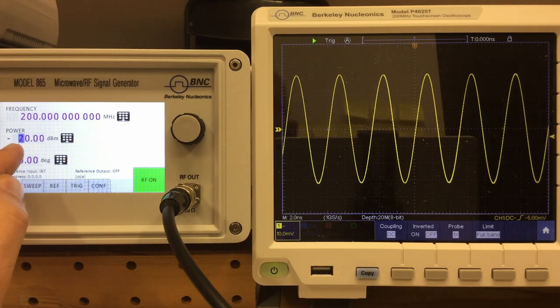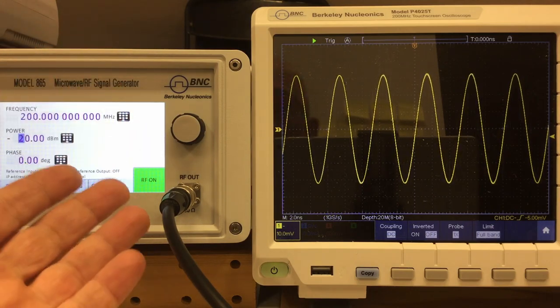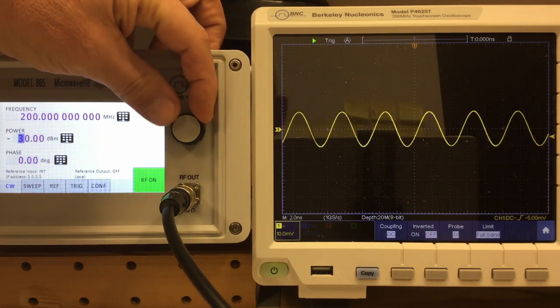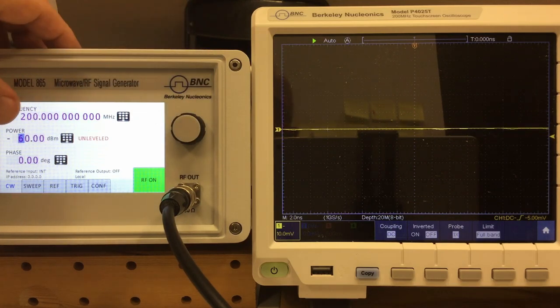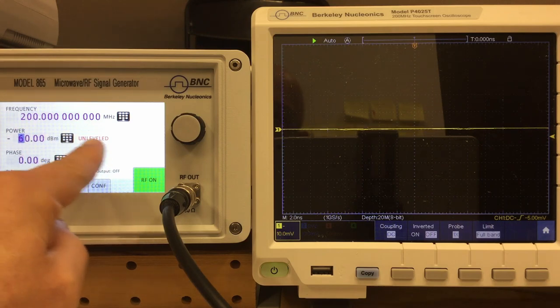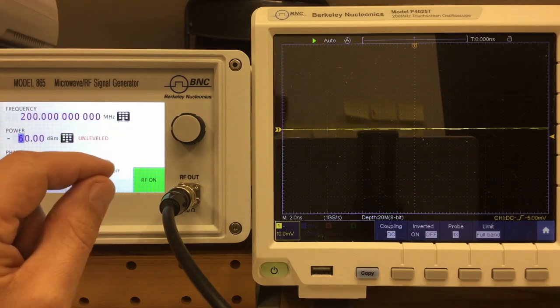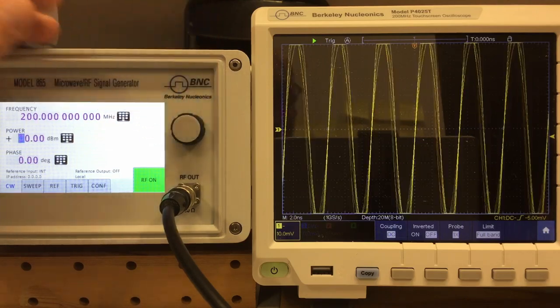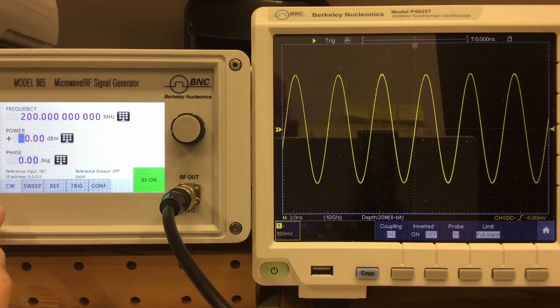Secondly, minus 20 dB is the lowest power setting without any additional option. Now, that unit has the PE4 option installed, so I can turn that down to minus 60 dBm. Minus 60 dBm again is unleveled for my 200 MHz here. You have to look into the specification for that. But let's return to 0 dBm, adjust the scope, and talk about that phase parameter here. But to do that, we'll need to have a look into the reference menu.